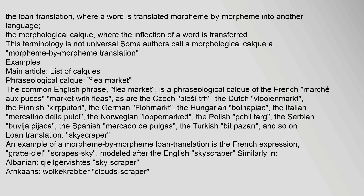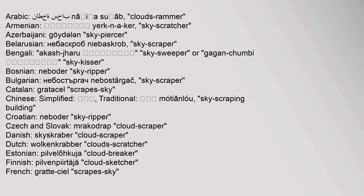Loan translation — skyscraper. An example of a morpheme-by-morpheme loan translation is the French expression gratte-ciel, modelled after the English skyscraper. Similarly in Albanian, qielgërvitëse (skyscraper); Afrikaans, wolkekrabber (cloud scraper); Arabic, nāṭiḥat saḥāb (clouds rammer); Armenian, erknikarchunak (skyscratcher); Azerbaijani, göydələn (sky piercer); Belarusian, nabaskrab (skyscraper); Bengali, akasajaru (skysweeper) or gaganacumbi (sky kisser); Bosnian, neboder (sky ripper); Bulgarian, nebostargak (skyscraper); Catalan, gratacels (scrape sky).